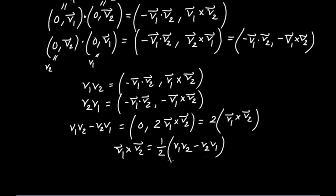So there's the relation between the cross product and quaternion multiplication. One neat thing going on here is that quantities like V1V2 minus V2V1 — or more abstractly AB minus BA, where I have the product AB subtracted from the reverse order BA — these things are called commutators.